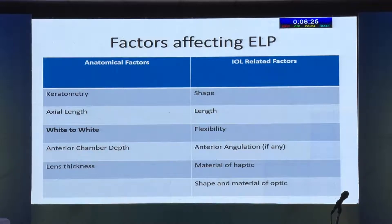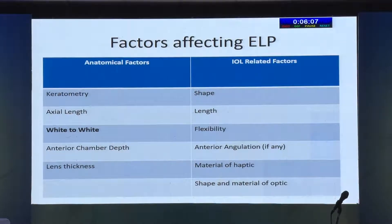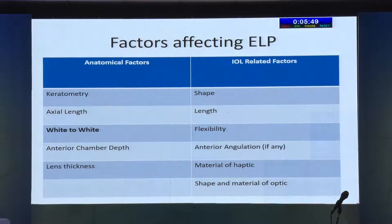Factors affecting ELP include keratometry, axial length, white-to-white — which tells you the shape of the cornea and how the lens will sit — anterior chamber depth, and lens thickness. IOL-related factors include the shape of the lens, length, flexibility, angulation, haptic material, optic shape and material, size, whether it is biconvex or plano-convex, and the refractive index. For a given lens, the ELP changes depending on its power because the nodal point changes. All of these must be taken into account to achieve an accurate outcome.